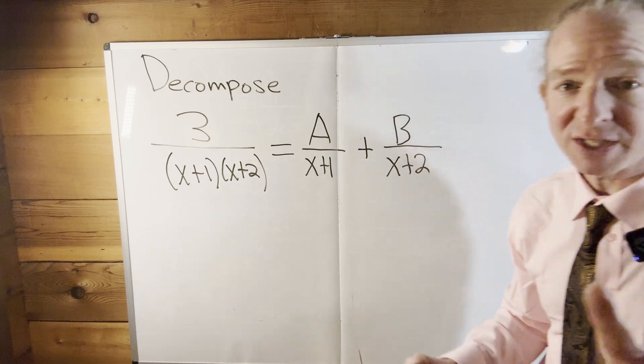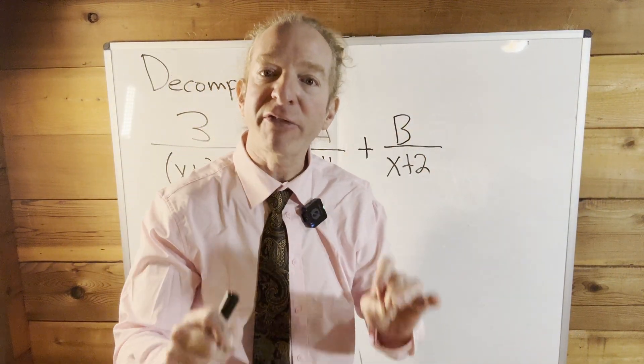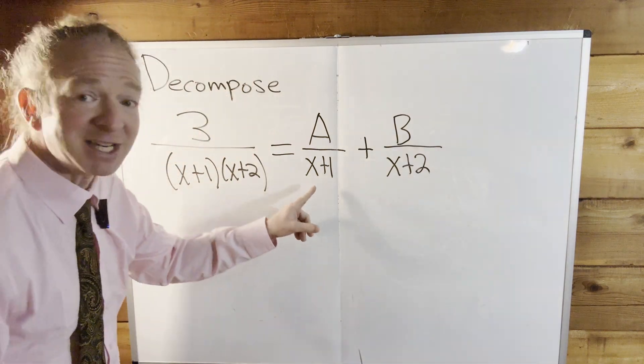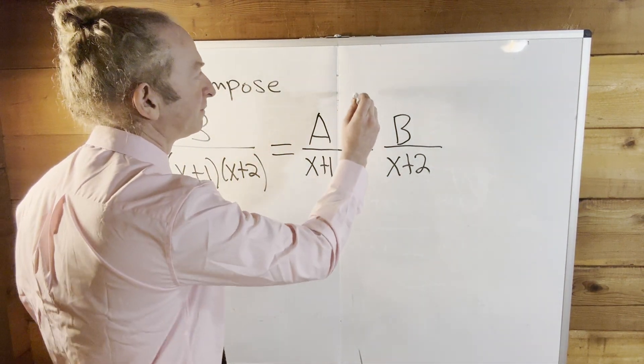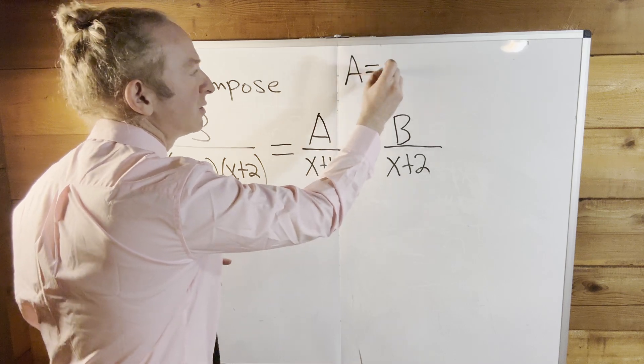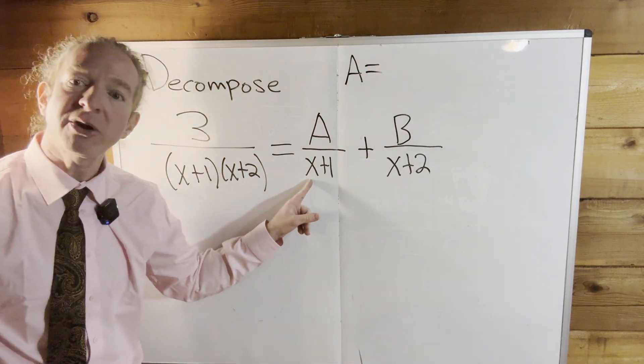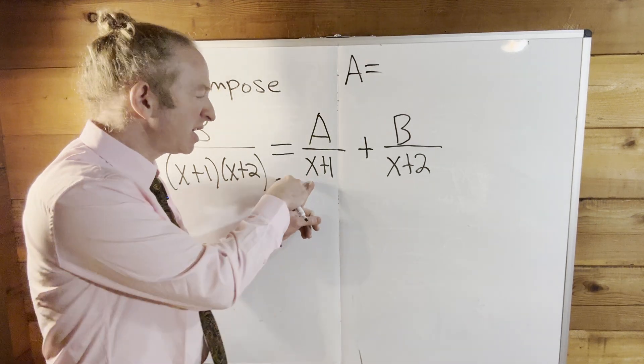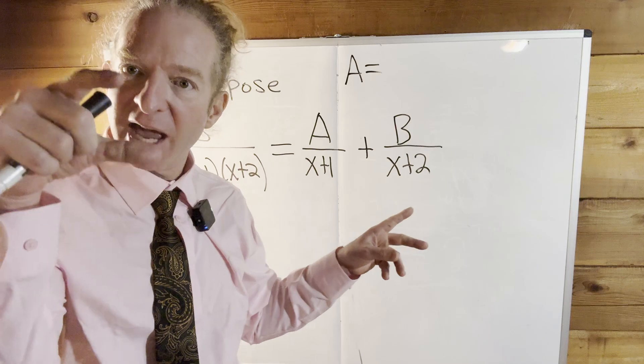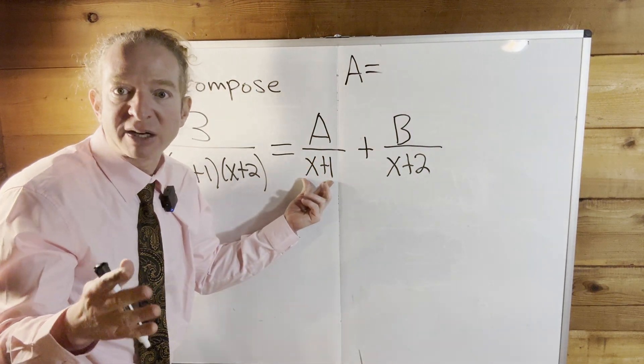All right, so we're going to find A. This is where the powerful stuff happens. Again, it's called the cover-up method. To find A, what you do is you look under A and you say, what makes this undefined? Well, negative 1, right? If I put a negative 1 here, it's going to be A over 0. Or what makes the bottom 0? Negative 1.